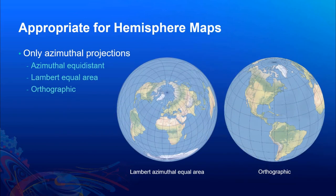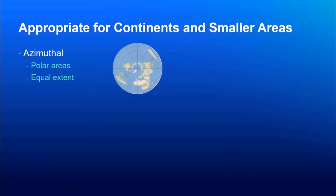When you start moving down in scale to hemisphere maps, then pretty much azimuthal projections would be appropriate, such as azimuthal equidistant, Lambert equal area, or orthographic. And the pictures we have here, the left one is Lambert azimuthal equal area, and the one on the right is orthographic. If you've been around long enough to use ArcView GIS, then orthographic was also called the world from space projection because it looks like you're sitting out in space and looking at the Earth.